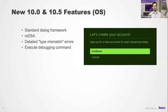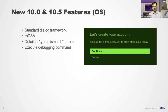Also new this year: detailed type mismatch errors. In the past, when you ran into a type mismatch error in BrightScript, the debug console would only tell you that there was a type mismatch and what line it happened on. Now it will also tell you what the mismatch was — for example, 'you can't compare a string to an int.' This is really helpful for debugging, and has already been very useful in our own work.